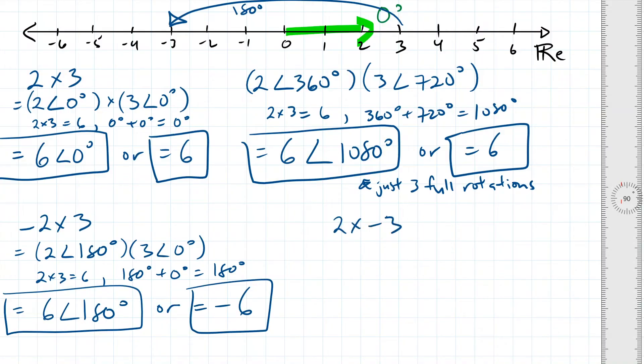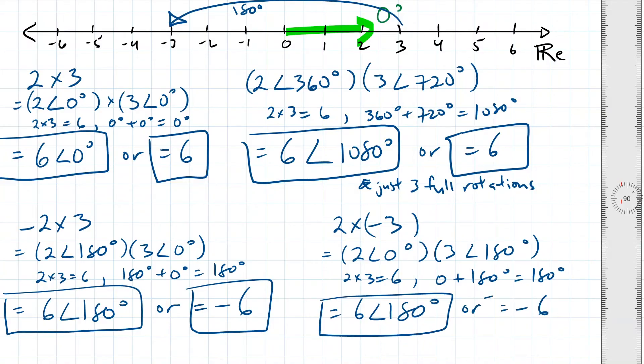So if we do the other weird example of 2 times negative 3, it can be represented by this expression. 2 with a phase shift of 0 times 3 with a phase shift of 180 degrees. Again, 2 times 3 is 6, and 0 plus 180 is equal to 180 degrees. So our final answer is still 6 with a phase shift of 180 degrees, or simply put, negative 6.